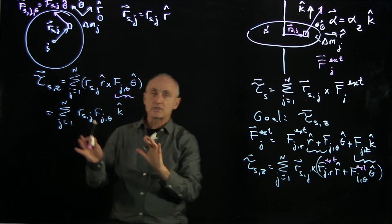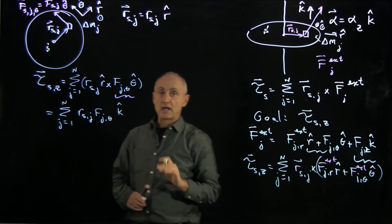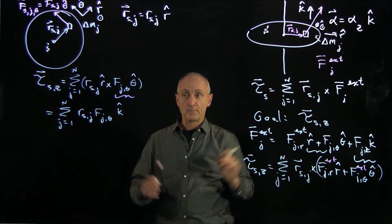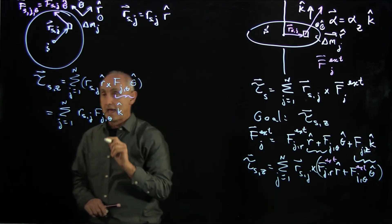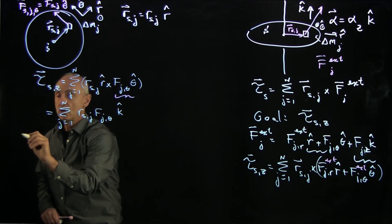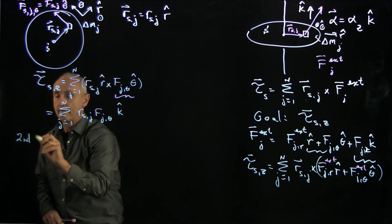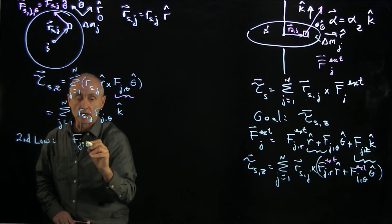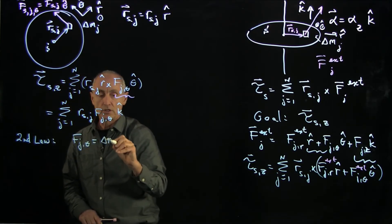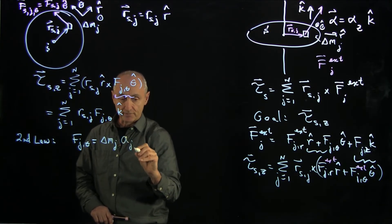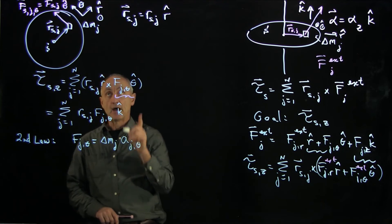Now, that's just the calculation of the torque. But as always, it's crucial to understand where Newton's second law appears in these calculations. And Newton's second law for this mass element delta m_j, so the second law, is telling us that the tangential force is proportional to the mass element, times the tangential acceleration of that mass element.